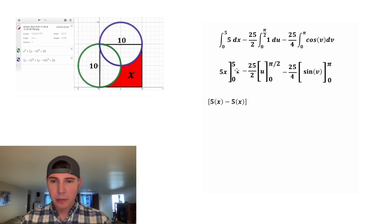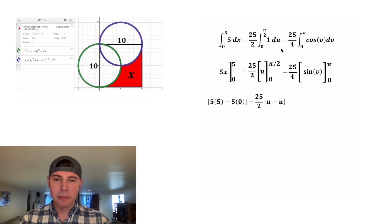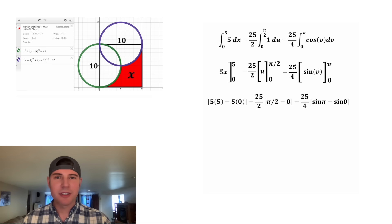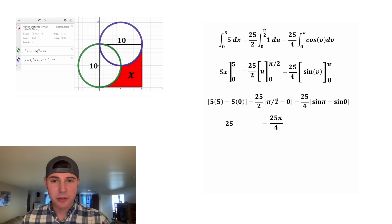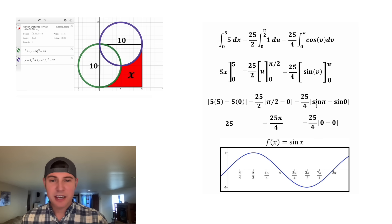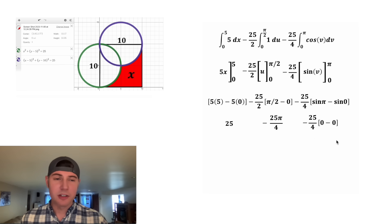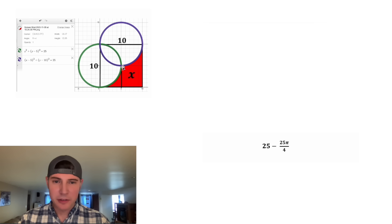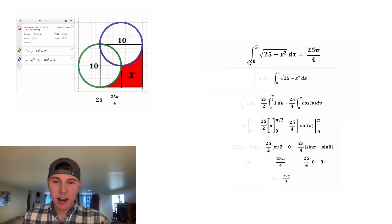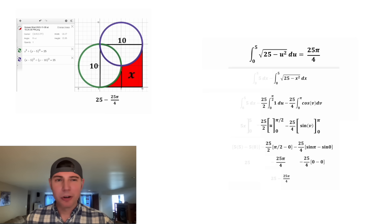Evaluating: 5 times 5 minus 5 times 0 is 25. For the second term, negative 25 over 2 times pi over 2 gives negative 25 pi over 4. For the third term, sine of pi and sine of 0 are both 0, so that term is 0. So the final answer for the first red region is 25 minus 25 pi over 4. We also note that the entire trig integral simplified to 25 pi over 4 — let's put a box around that, because it will be useful.